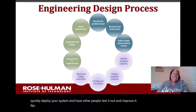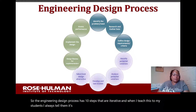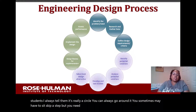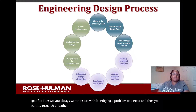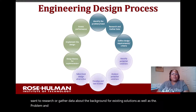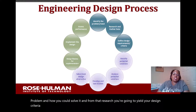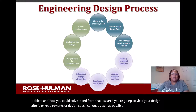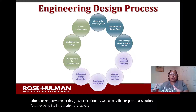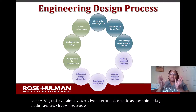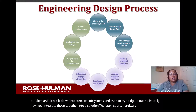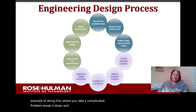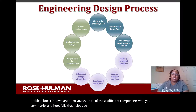The engineering design process has 10 steps that are iterative. When I teach this to my students, I always tell them it's really a circle — you can always go around it, and sometimes you may have to skip a step, but you need to iterate until you meet your design specifications. You start with identifying a problem or need, then research existing solutions and background data, yielding design criteria and potential solutions. It's important to break a large problem into subsystems and figure out how to integrate them — the open source hardware process is another example of this, where you break down a complicated problem and share all the different components with your community.